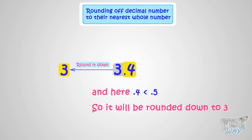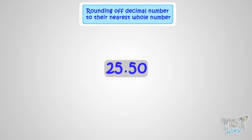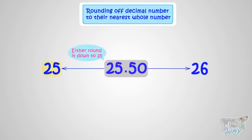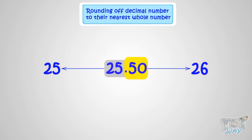Now let's take another example. Here we have the number 25.50. That means this number is between 25 and 26, and it can be either rounded down to 25 or rounded up to 26 — it all depends on the decimal portion, which is 0.50 here. And we learned the rule: if the decimal portion is 0.5 or more, the number is rounded up.